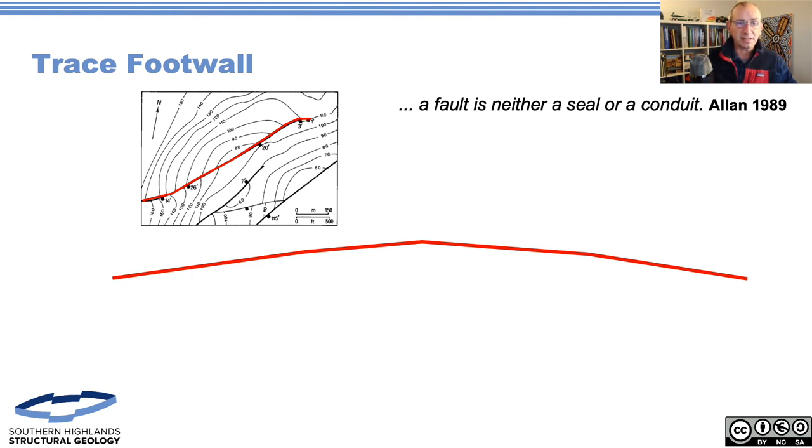Allan's method consists of - if we take our British coal example or any of the geometry there - we've got our trap potentially with the upthrown side at 80 feet going down to 110 feet. The red line represents the footwall trace. We just digitize that footwall trace. You can do this with pencil and paper - Allan did all his stuff with pencil and paper.